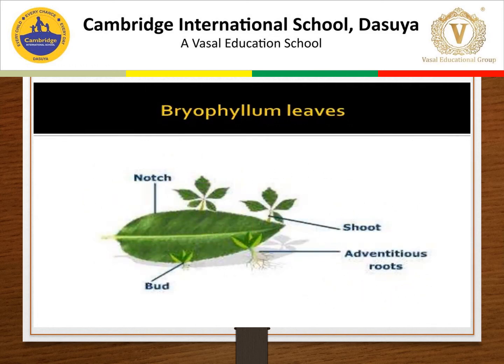In vegetative propagation by leaves, as seen in the Bryophyllum plant, buds are present along the margins of the leaves. These buds develop into plantlets under favorable conditions. When the leaves fall on the ground, the plantlets and buds develop into new plants.